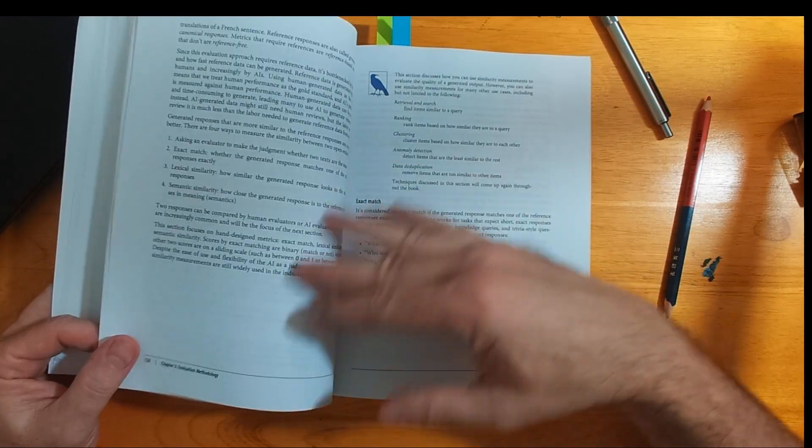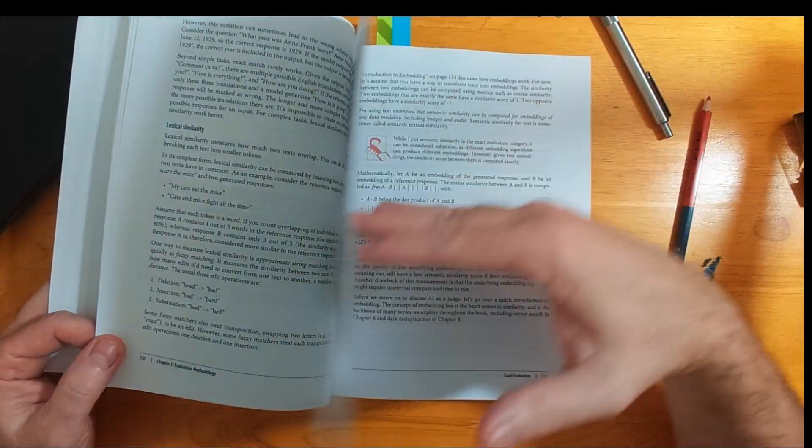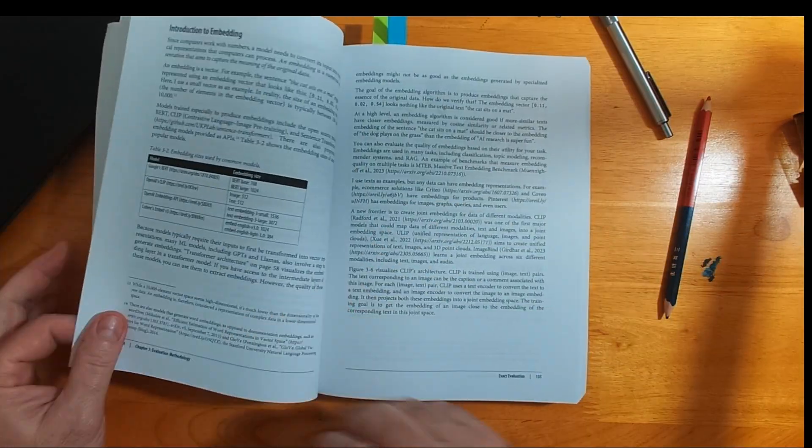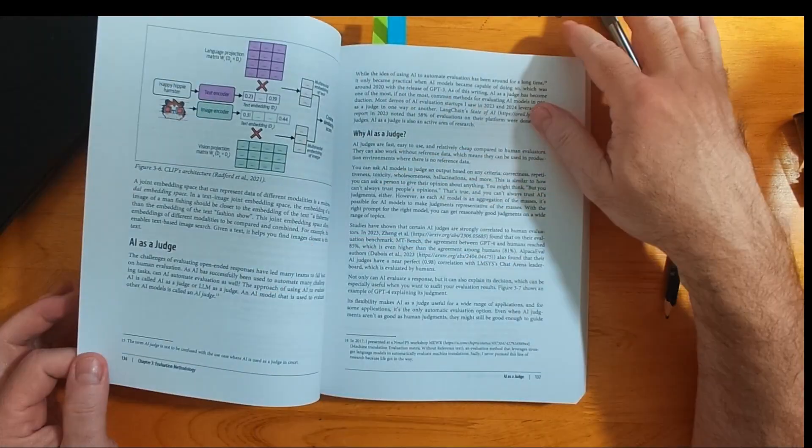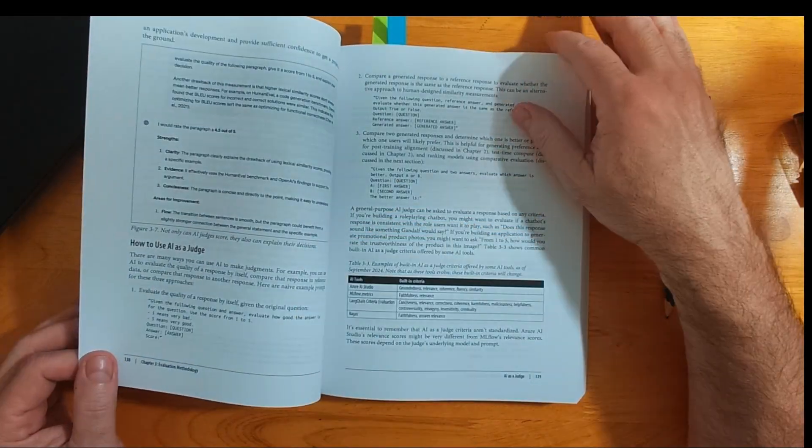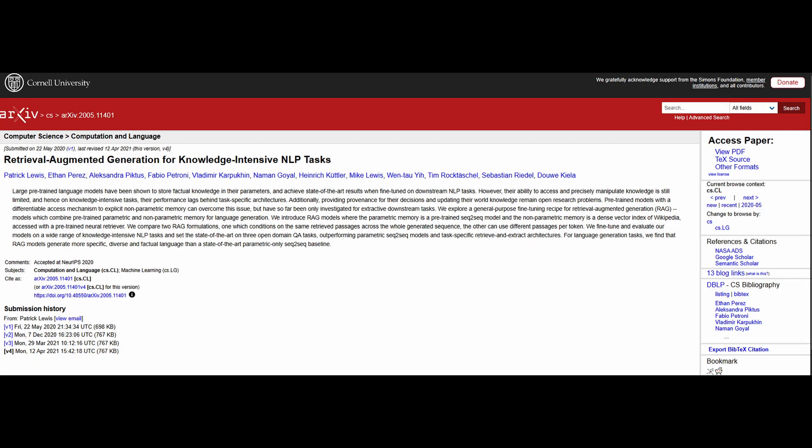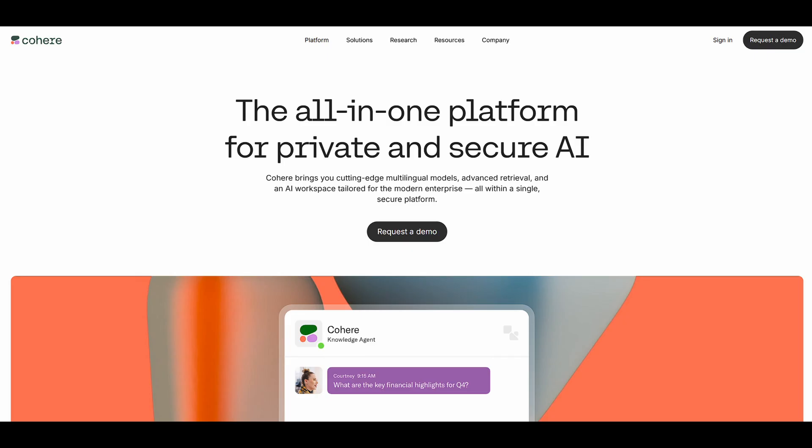One of the things I really like about this book is that it's well-researched. Chip identifies original papers and sources of information. For instance, she makes sure we know that RAG was coined in the paper Retrieval Augmented Generation for Knowledge-Intensive NLP Tasks in 2020 by Patrick Lewis and others. Patrick Lewis is now a research scientist at Cohere.